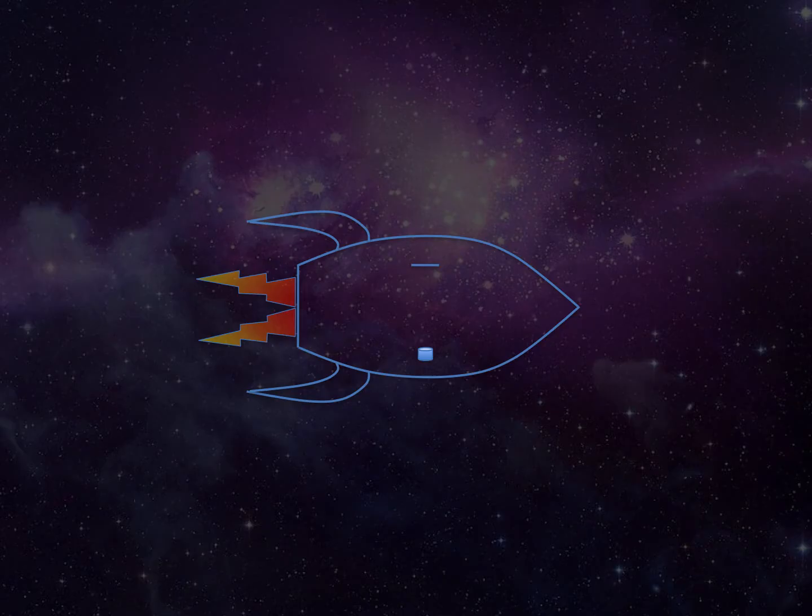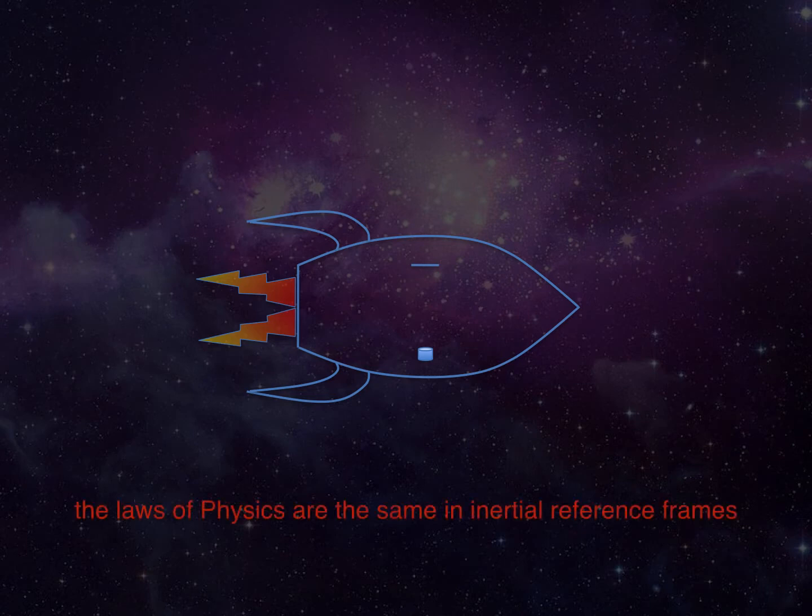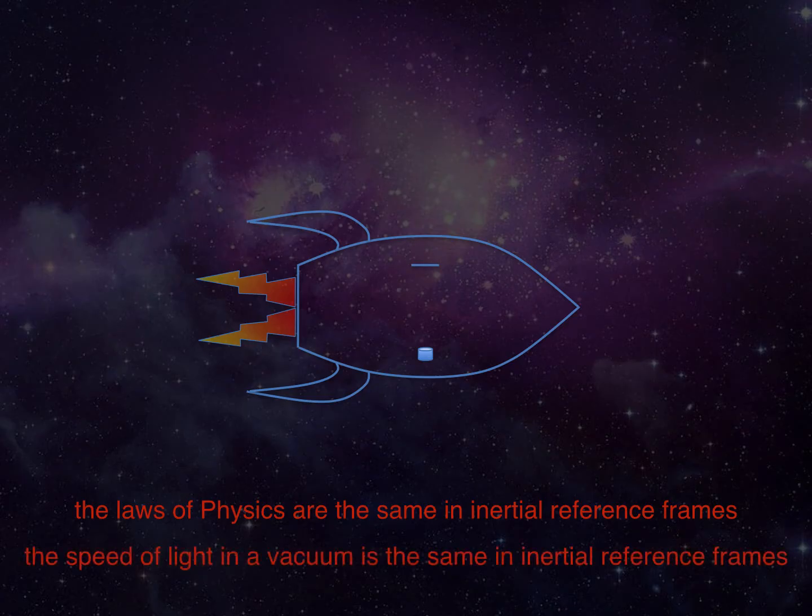In the theory of special relativity, there are two rules, known as postulates. First of all, the laws of physics are the same in inertial reference frames. And second, the speed of light in a vacuum is the same in inertial reference frames. These postulates seem fairly straightforward, but they have far-reaching consequences. So let's take a look at that rocket.